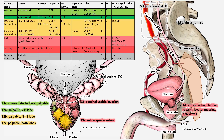Instead of the AJCC system, we use something called the NCCN risk groups — the National Comprehensive Cancer Network. Here I'm showing a table juxtaposing the different risk groups. These risk groups take into account your clinical T stage, the biopsy Gleason scores — which is how aggressive the cancer looks under the microscope — your PSA in nanograms per milliliter, the percent of positive cores from the biopsy, and other risk features including the N stage and M stage.